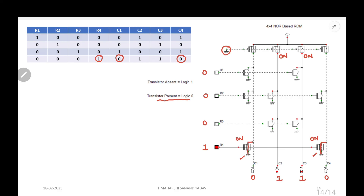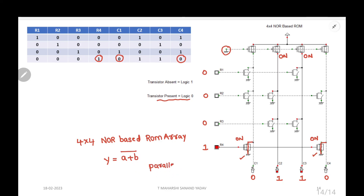This is the working of the 4x4 NOR-based ROM array. Remember: NOR means Y = (A + B)̄, where + means parallel. That is the reason the active transistors are connected in parallel. In later videos we shall try to understand the working of the 4x4 NAND-based ROM array.